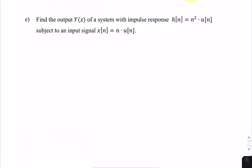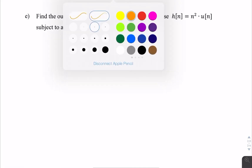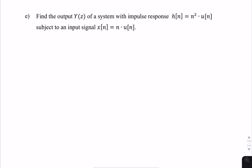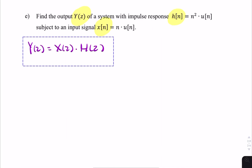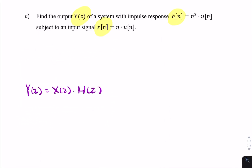Part E is completely separate and asks for the output of a system with a given impulse response and a given input. The output Y(z) equals X(z) times H(z). Because we have a table of z-transforms, we can look up both X(z) and H(z) directly from the table.